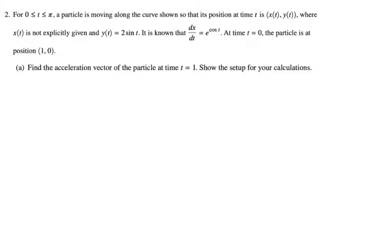For zero to pi, a particle is moving along a curve shown. Where x of t is not explicitly given, y of t is 2 sine of t. It's known that dx dt is e to the cosine of t. At time t equals zero, the particle is at position (1, 0).